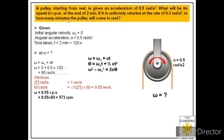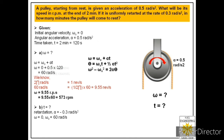Let us find the time for part B. Retardation alpha is minus 0.3 radian per second square, and final angular velocity is zero. The initial angular velocity is 60 radian per second, because when retardation is applied the pulley was rotating at 60 radian per second — the answer from the previous part acts as the initial angular velocity here. We know omega, omega naught, and alpha, so we need to find t.